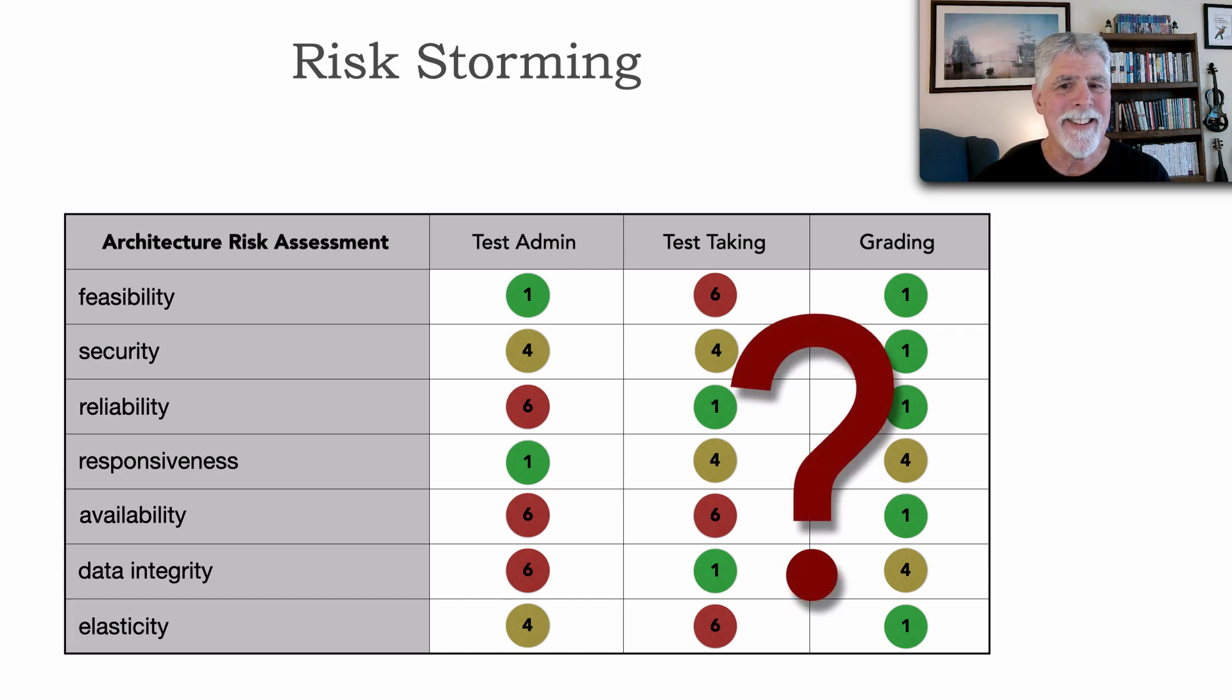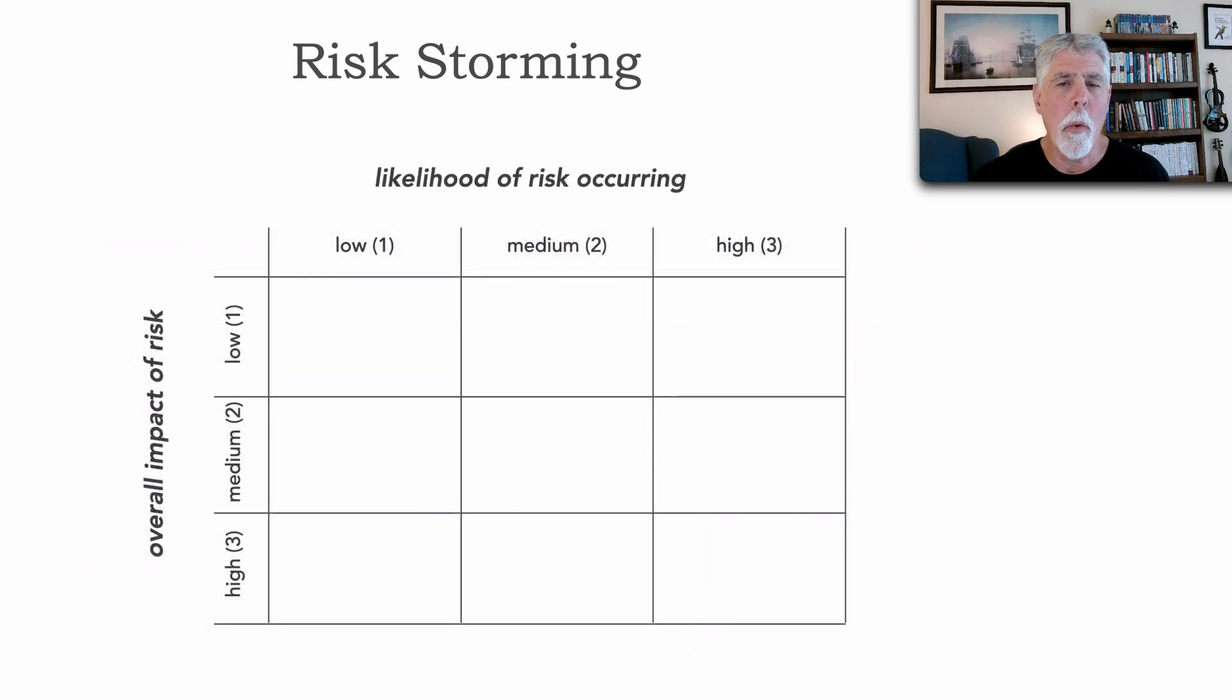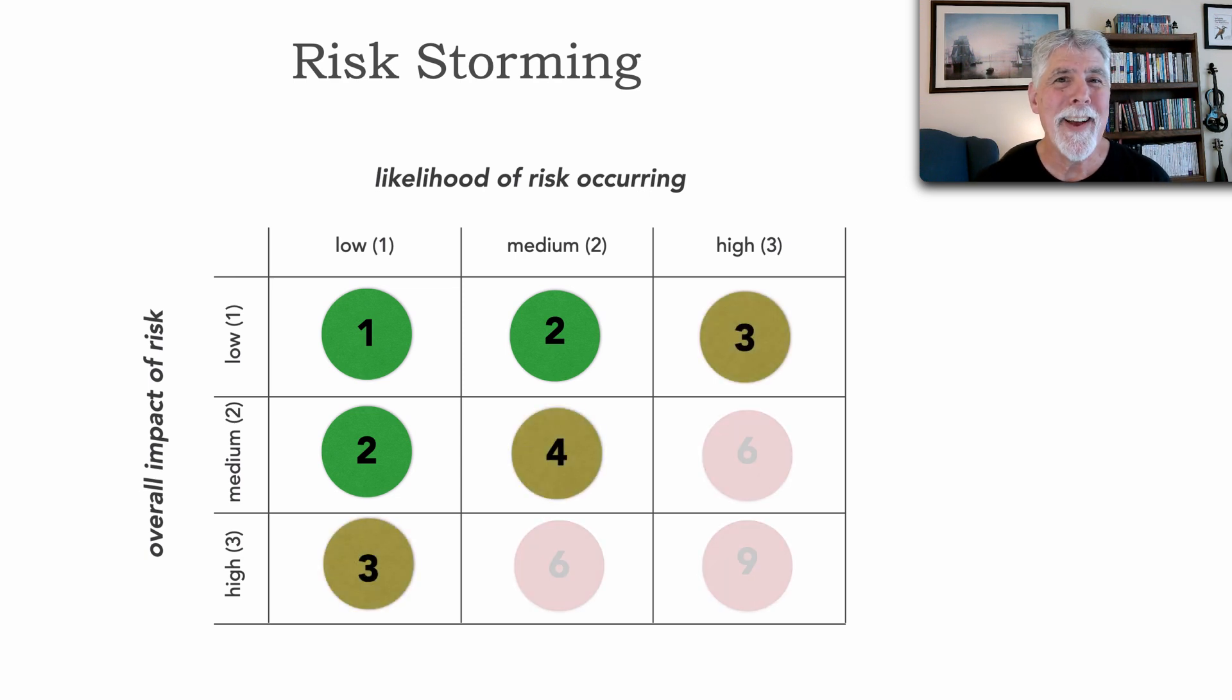how do we identify this risk? And I showed you one area or one aspect technique of doing that, and that was through this matrix where we take a look at the overall impact of the risk, crossed with the likelihood, and rate these low, medium, or high, and then multiply each of the grids to get a numerical analysis. In other words, one to two is low, three to four is medium, and six to nine is a high risk.